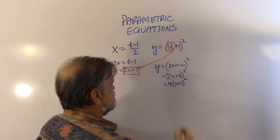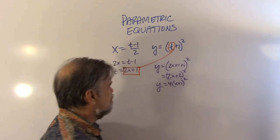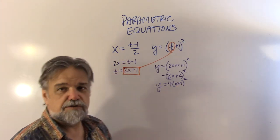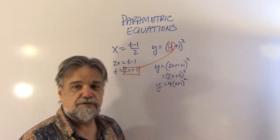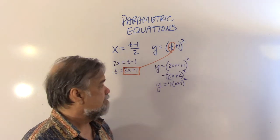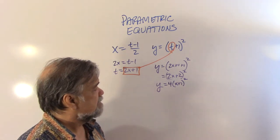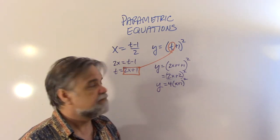And I know what that looks like. That is a parabola that's been stretched up by a factor of 4, and it's scooted over to the left one unit. So the vertex of that parabola is at the point negative 1, 0.